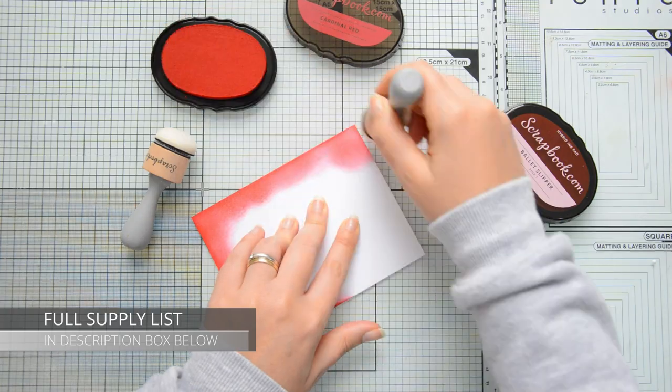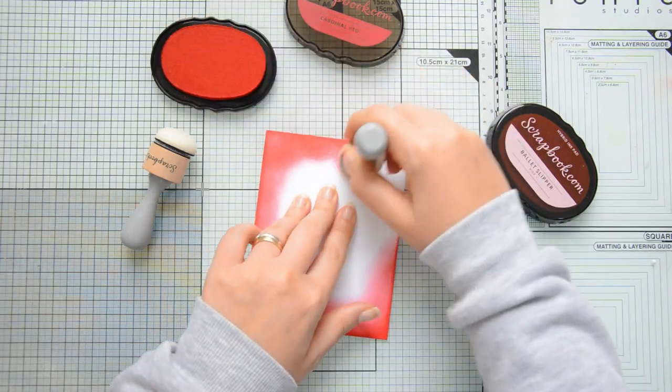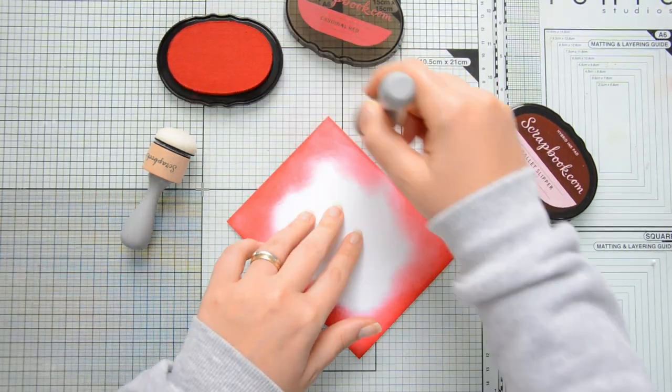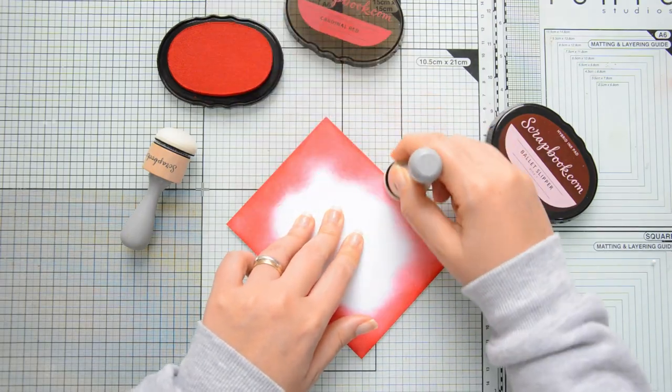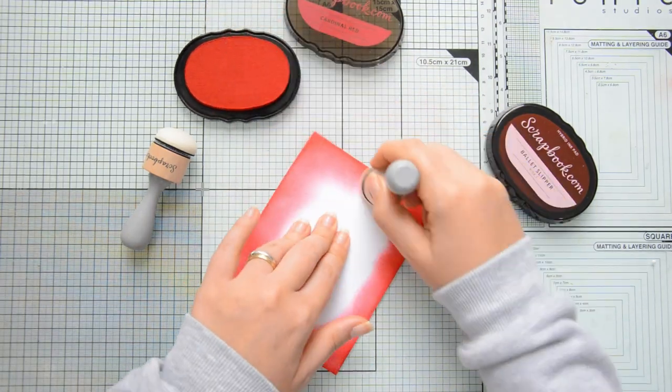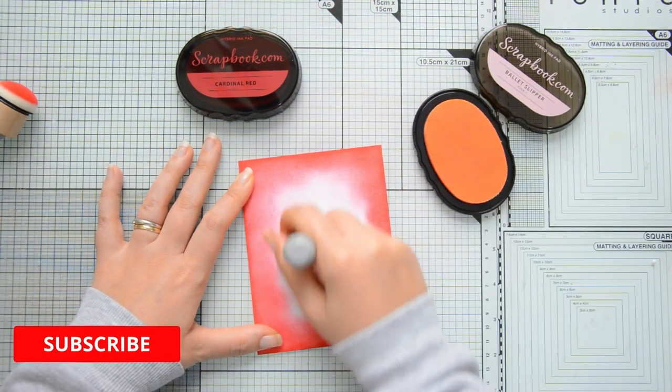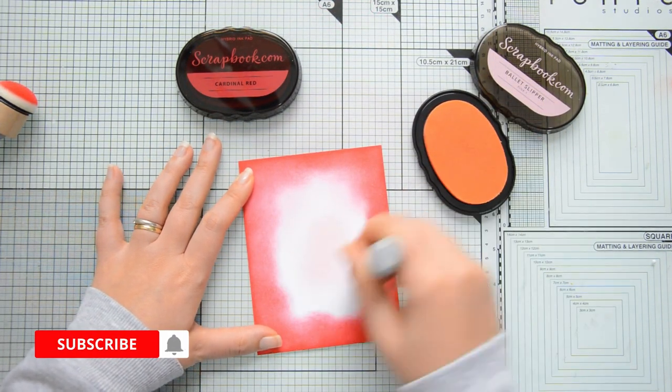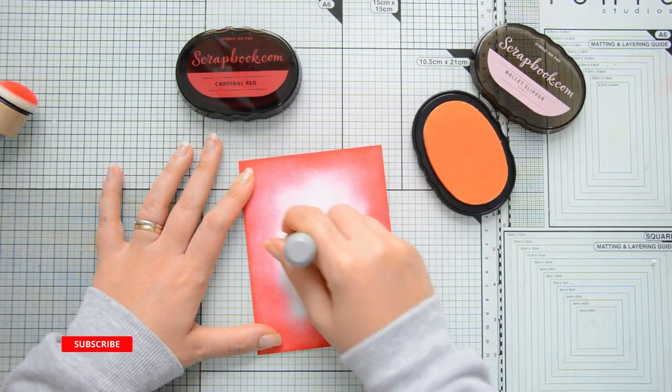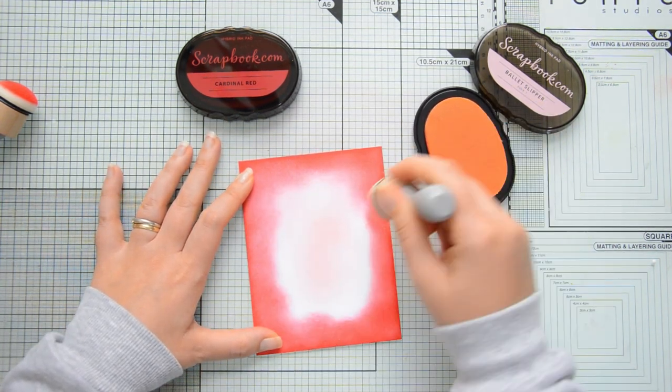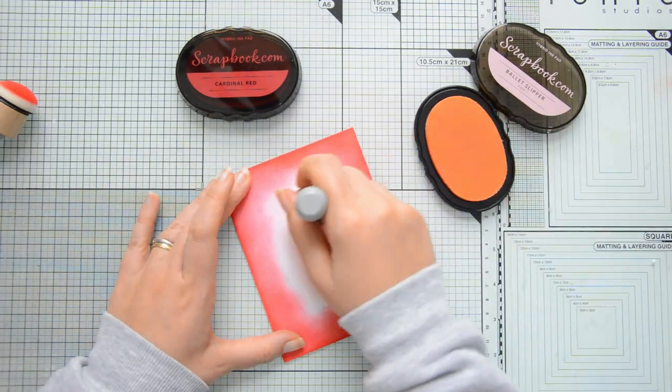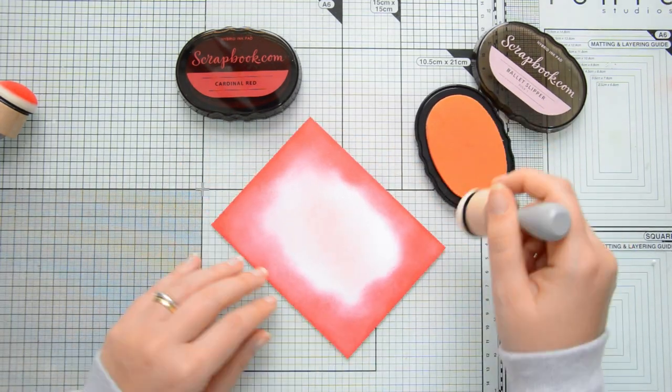I'm going to do some ink blending on this panel using scrapbook.com premium hybrid inks in the colors cardinal red and ballet slippers. I'm using my domed ink blenders to do the blending and I'm going for a gradient that is lighter at the center where I'll be adding my ballet slippers and darker on the edges where I have my cardinal red.